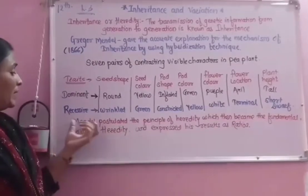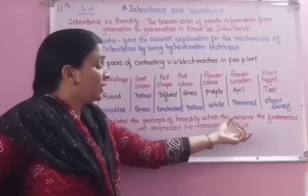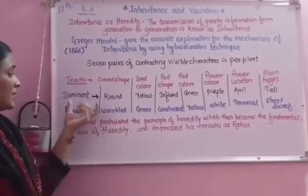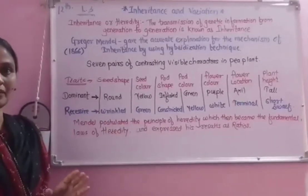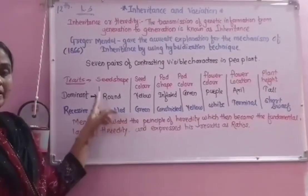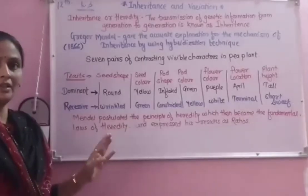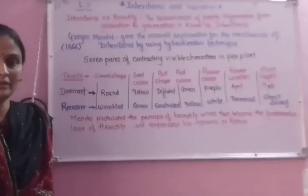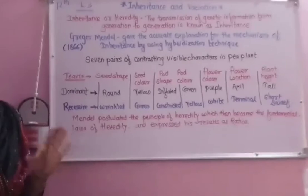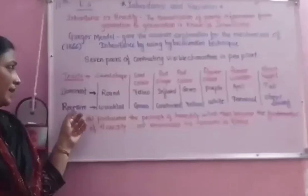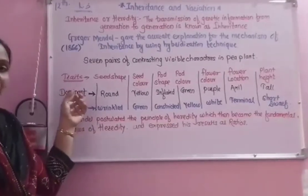Through his experiment, Mendel postulated the principles of heredity, which then became the fundamental laws of heredity, and expressed his results as a ratio. When crossing two plants of the same species but with different traits, some characteristics appear in the F1 generation while others do not express themselves. These are termed dominant and recessive traits. Dominant traits are expressed in the F1 generation, while recessive traits are not.